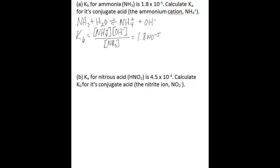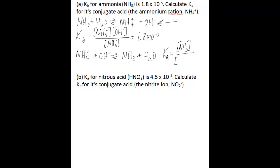In this problem, you're being asked to find the K value for the reverse of this reaction, where ammonium transfers a proton to hydroxide. So the reaction would be NH4+ plus the hydroxide ion, giving you ammonia plus water. The important relationship to know here is that Ka is equal to Kw over Kb.